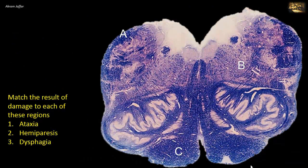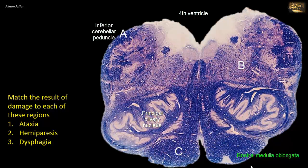Match the result of damage to each of these regions. This is a section of the open part of the medulla, the upper part where the central canal opens to form the floor of the lower part of the fourth ventricle. Note the crumpled bag shape of the large principal olivary nucleus that characterizes the upper medulla. Dorsolaterally, the medulla is connected to the cerebellum via the inferior cerebellar peduncle. The inferior cerebellar peduncle is composed of fibers entering the cerebellum called the restiform body. The dorsal spinocerebellar tract enters the cerebellum through the inferior cerebellar peduncle. Thus, damage of the inferior cerebellar peduncle results in ataxia.